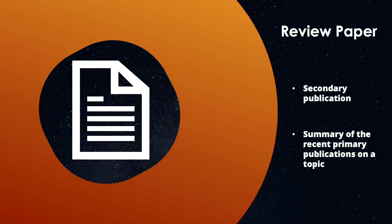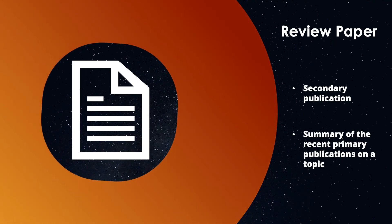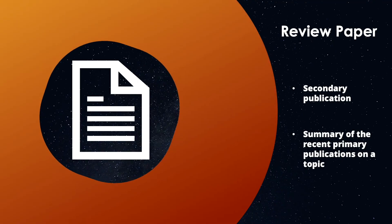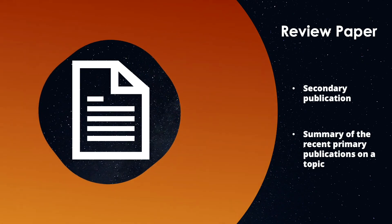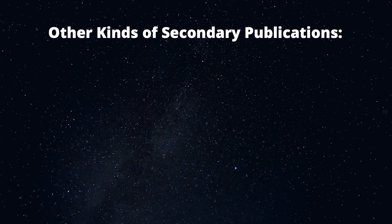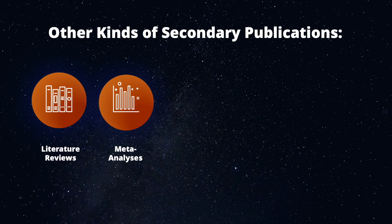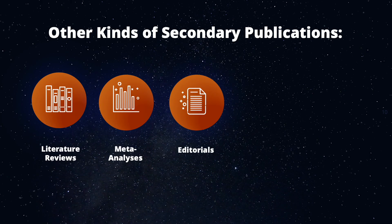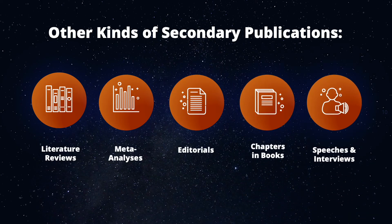So a review paper is a form of secondary publication, which summarizes the recent primary publications on a topic. The goal of a review paper is to identify the recent progress that has been made in the field, to shed more light on the gaps in knowledge, as well as to recommend various ideas on how to further contribute to the field. Other kinds of secondary publications include literature reviews, meta-analyses, editorials, chapters in books, and speeches and interviews.